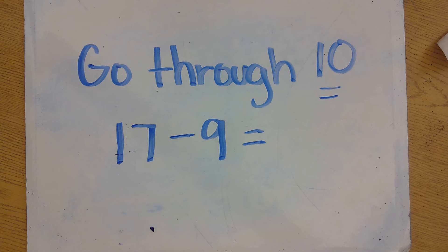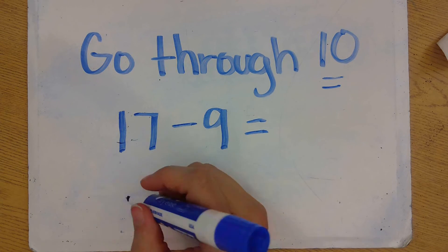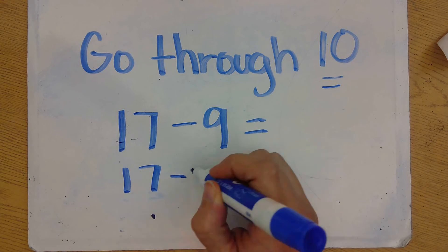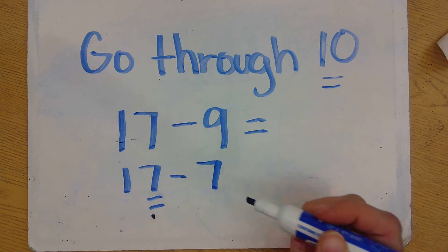Well, if I use the going through 10 strategy, what I would do is I would probably think, you know what, I want to get back to 10, so how do I get to 10 using these numbers? Well, I can just start out by subtracting 7 from 17.